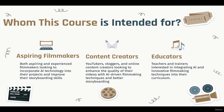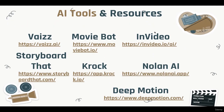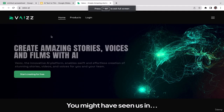In this video we're going to get to know all AI tools and resources we'll use in this project. In total we have seven different AI tools. The first three — Vise, MovieBot, and InVideo — are AI text-to-film generators. All you need to do is type in any topic you want, click generate, and in less than a couple of seconds AI automatically generates a full film. Let's click the link for Vise — it takes you to their page: 'Create amazing stories, voices, and films with AI.'